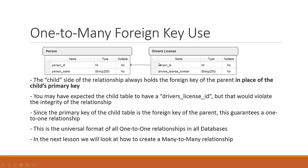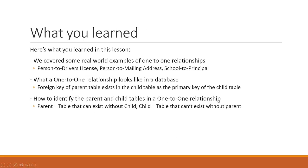This is the universal format for all one-to-one relationships in all databases. To summarize: we covered real-world examples like person to driver's license, person to mailing address, and school to principal. We saw that in a one-to-one relationship, the foreign key of the parent exists in the child table as the child's primary key. The parent can exist without the child, and the child cannot exist without the parent. Next, we'll look at the many-to-many relationship.